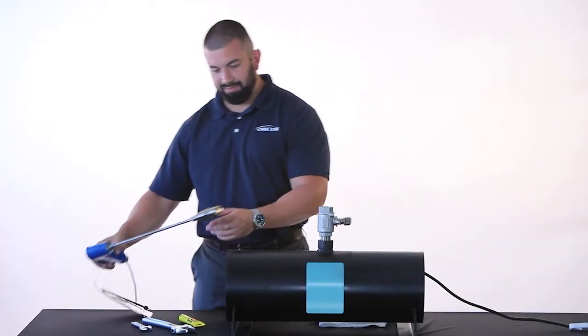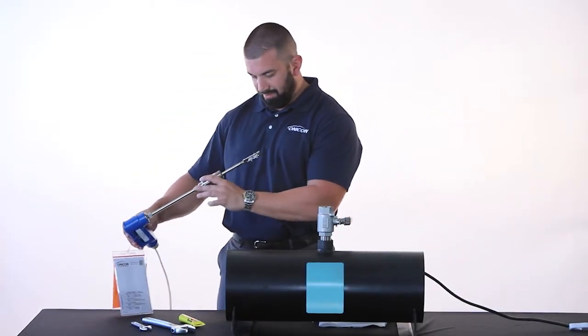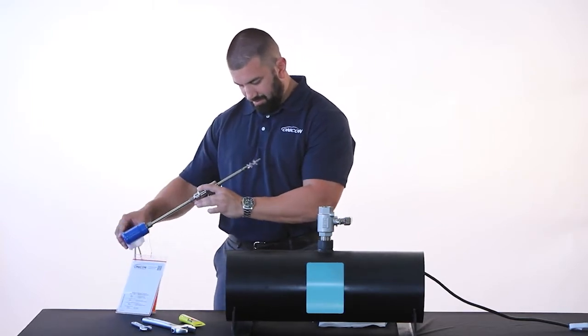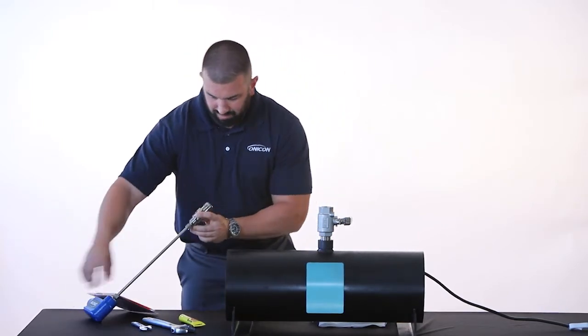Slide the flow meter hot tap adapter up the meter stem to examine the sensing assembly for anything that could hinder its performance. Then slide the hot tap adapter back down to cover the sensing assembly.